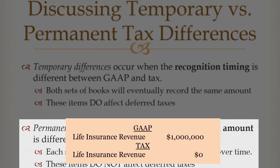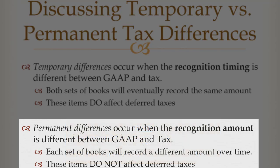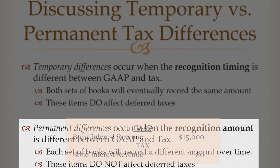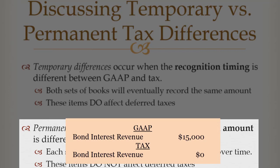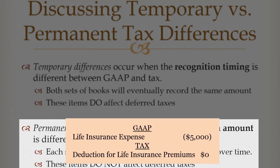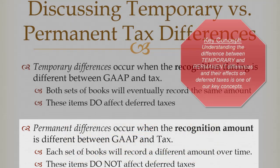Permanent differences don't go into our deferred tax calculations at all — we simply take them out of the equation and ignore them. Other examples of permanent differences include fines and penalties: if I get charged a fine by the federal government I don't get to take that as a tax break, but I do have to show it as an expense. Interest from municipal bonds is another permanent difference — I never have to pay U.S. federal taxes on interest from municipal bonds. Also, going back to life insurance, I can't deduct the premiums I pay, yet I don't have to pay taxes on the benefit I receive.